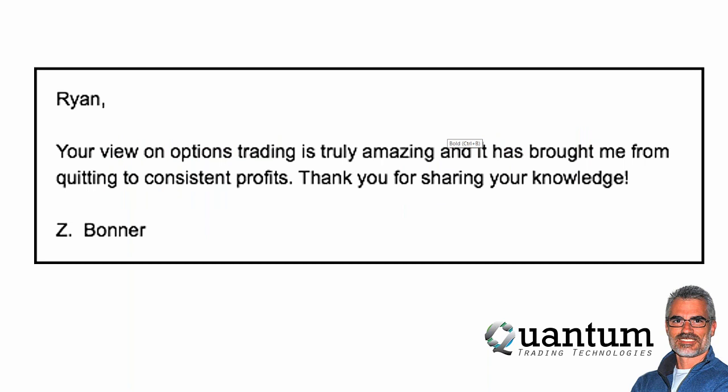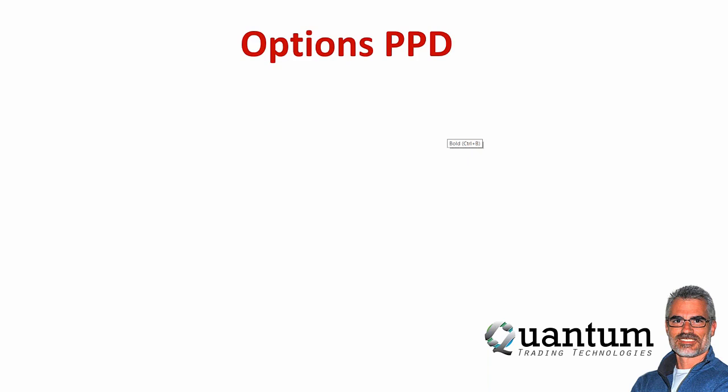I'm going to start by asking you a question. Which option is cheaper: option number one — a 200 strike call with three days left priced at $1.10 — or option number two — the same 200 strike call with 30 days left priced at $3.65? Obviously option number one, right? Well, I'm going to give you a different view on this — a different paradigm. I get emails all the time from traders who say, 'Ryan, your view on options completely changed how I trade' — going from frustrated and quitting to consistent profits.